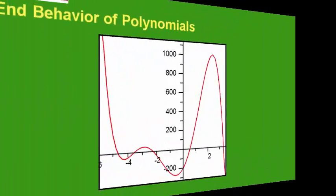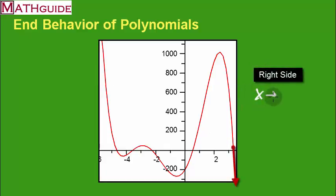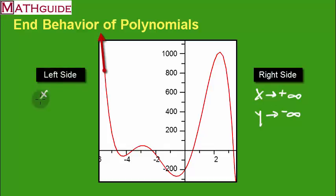In this example, the curve is even more complex, with a lot going on in the middle, but I don't really care about that when talking about end behavior. On the right side, x is going to positive infinity, and tracing your finger along the curve as you go to the right, the graph is going down forever — so that's negative infinity for y. On the left side, x goes to negative infinity, and as you move your finger to the left, the curve is going up forever — so y goes to positive infinity.